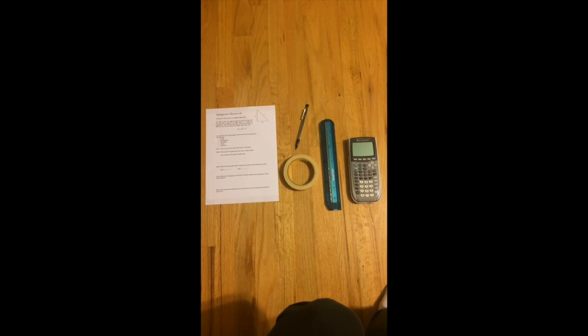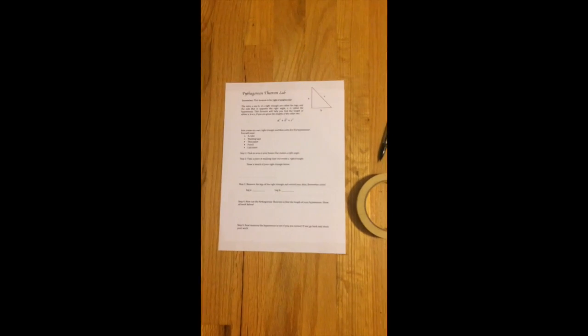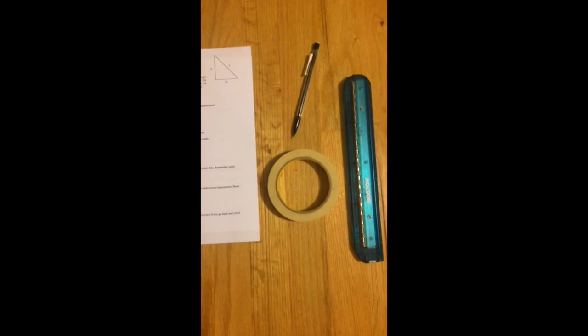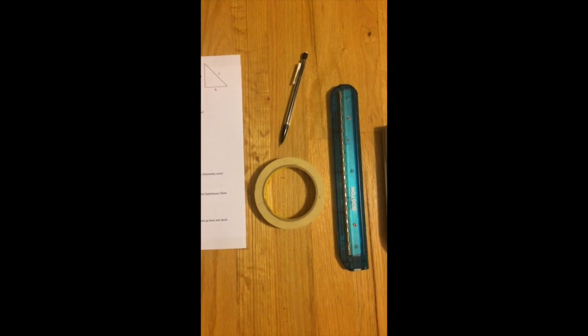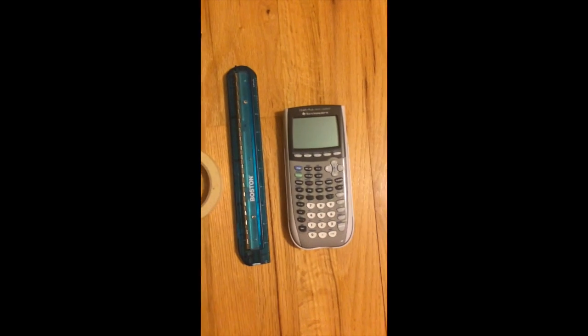Hello, today we're going to do a lab activity on the Pythagorean Theorem. The materials you will need are the lab sheet that correlates with this activity, masking tape, a pencil, a ruler, and a calculator.